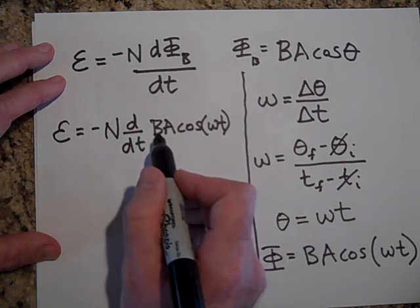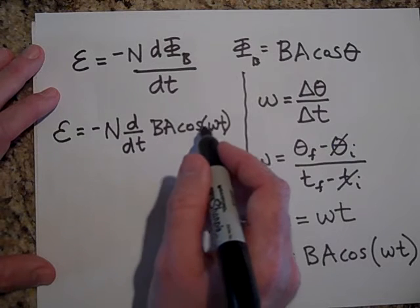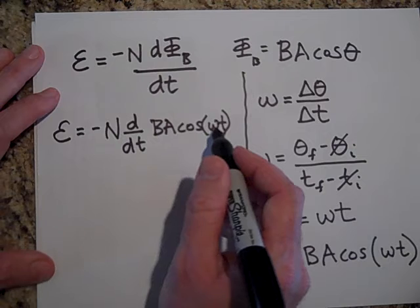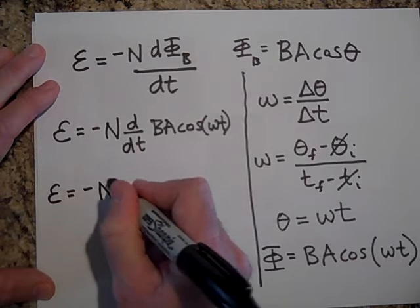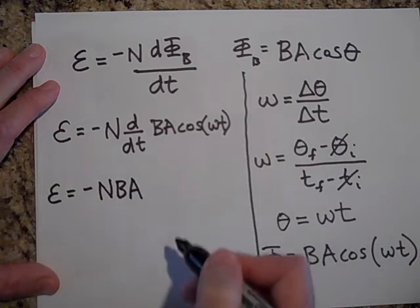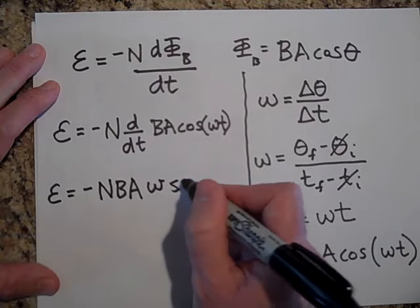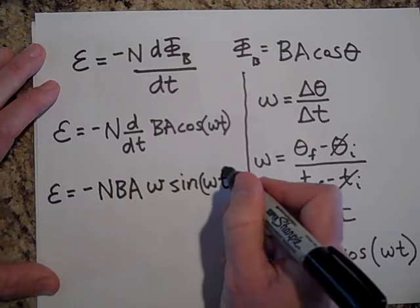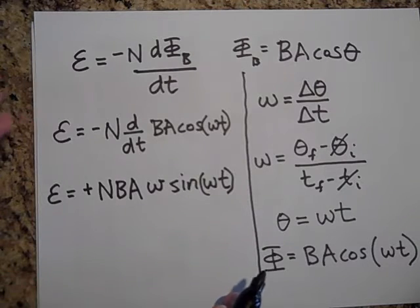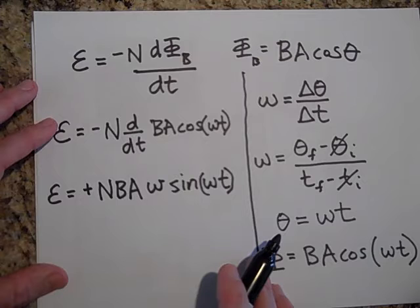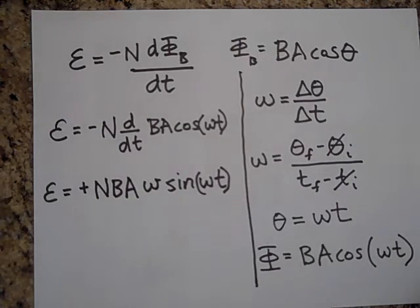Well, it turns out that the B and the A aren't changing with time, so I can bring them outside of the derivative. And so when I take this derivative, the cosine of omega T, using the chain rule, I'm going to get this. It's going to be negative N B A. And then I'm going to get, when I take the derivative, it's going to be an omega times the sine of omega T. And that's going to be a positive now, because the derivative of a cosine is a negative sine. So that's the EMF that's induced.